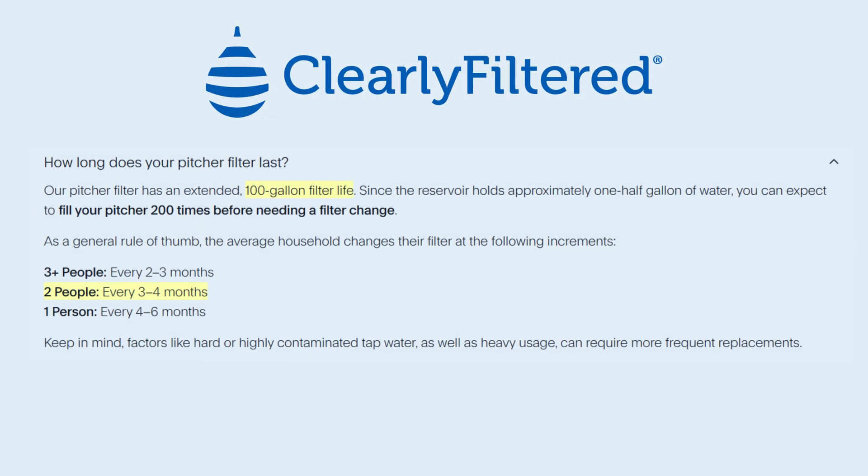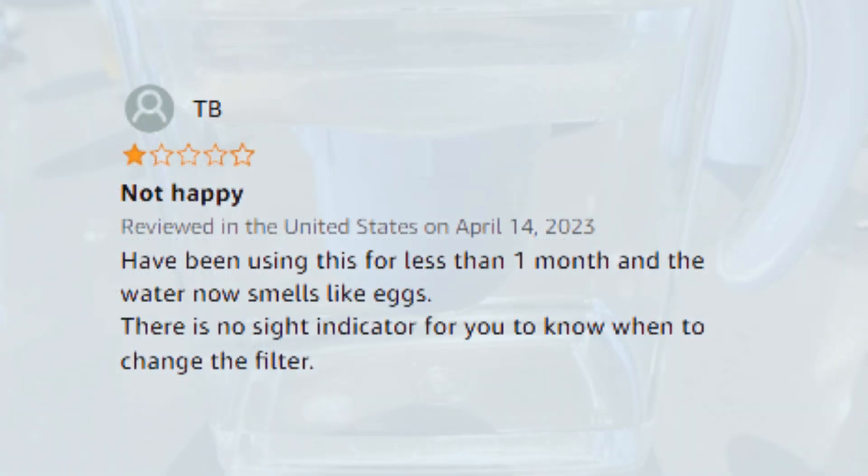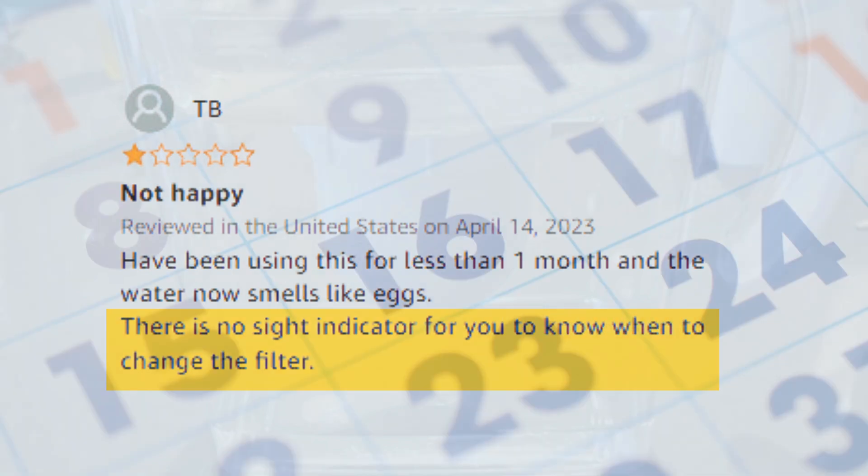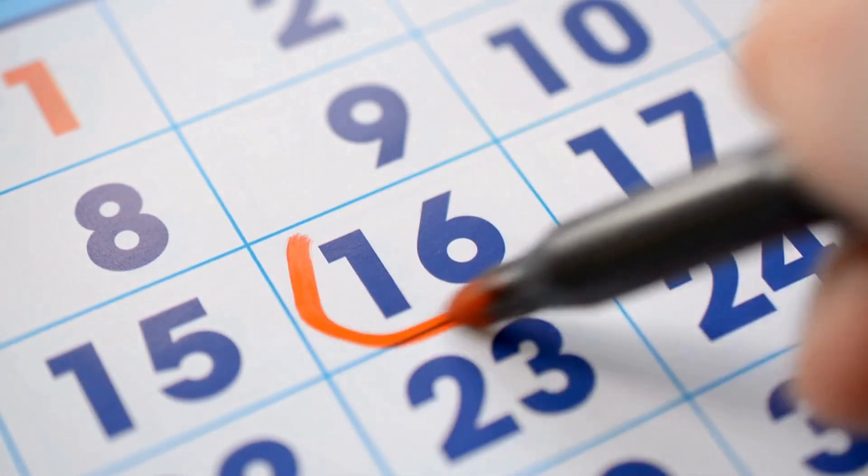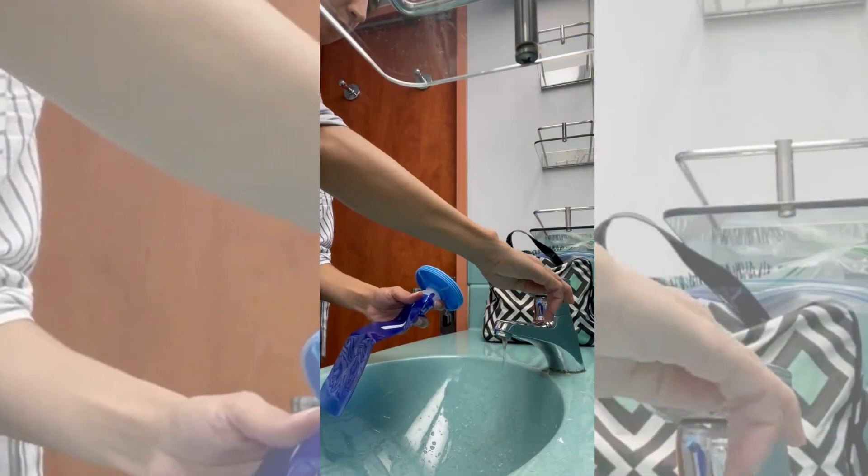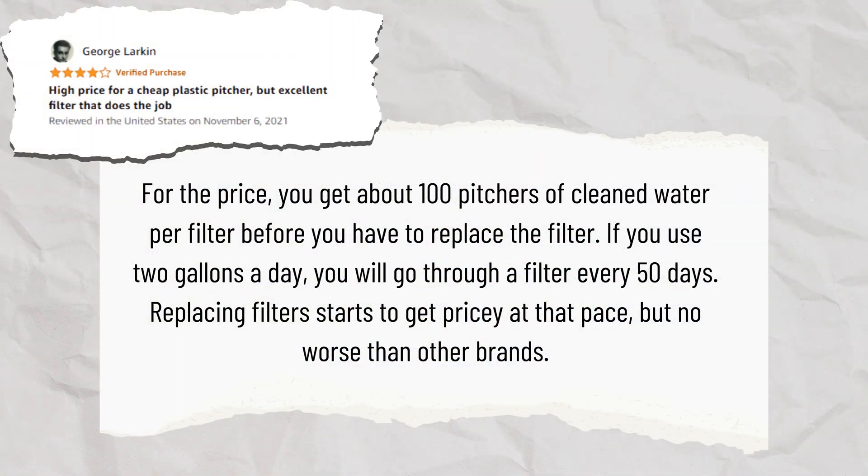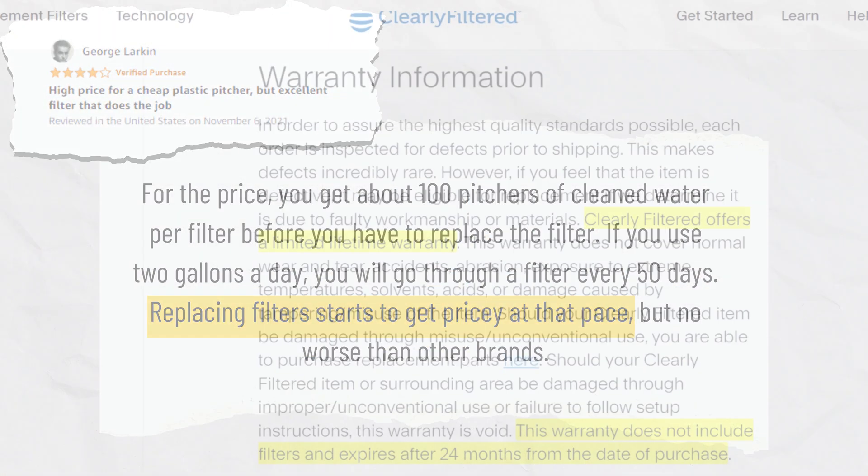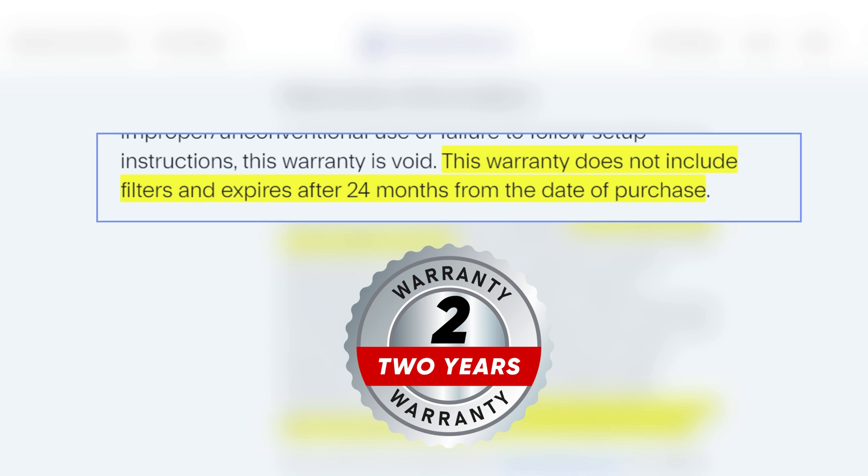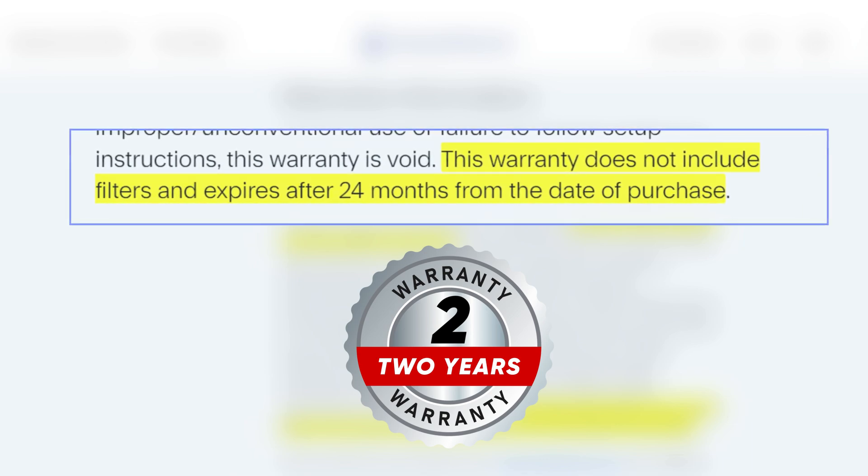Filters must be changed every 4 months for optimal performance. They can filter up to 100 gallons of water. There is no filter life indicator, so you must set reminders to replace the filter yourself. The replacement cost of a Clearly Filtered filter is $0.55 per gallon, which is more expensive than others. It is backed by a 24-month warranty on the pitcher, but filters are not included.